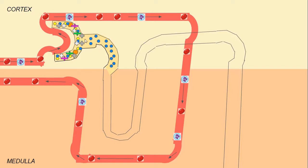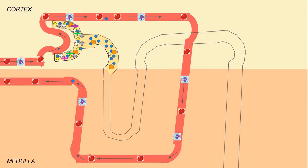From there, we go into the proximal convoluted tubule. Water continues on — initially 60 to 70% of the water is going to be reabsorbed back into the blood right away. Nutrients like glucose, almost all of them in the very beginning, are also going to go back into the blood.